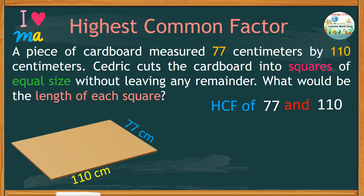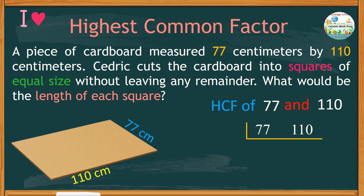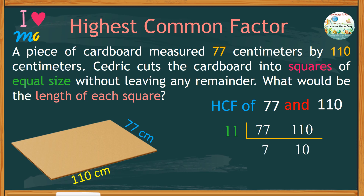Think of a number that can be used to divide 77 and 110 without a remainder. What number could that be? If you say it's 11, then you are right. 77 divided by 11, we get 7. And we can have 10 sets of 11 in 110. We can now stop dividing at this point since there are no other common factors for 7 and 10.